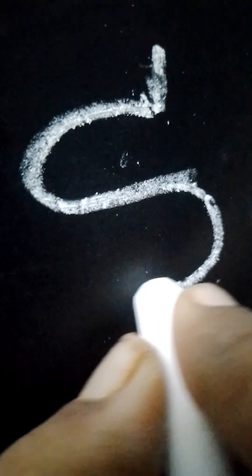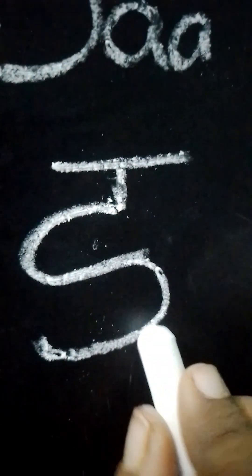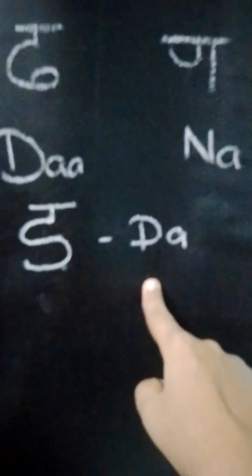Now third alphabet is Da. So for Da we are going to draw a small standing line, then a semicircle, and again a backwards semicircle. And we are going to join it with a sleeping line. This alphabet is called Da in Hindi.